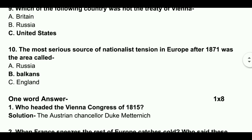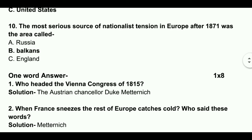One word answer. Who headed the Vienna Congress of 1815? Solution: The Austrian Chancellor Duke Metternich.